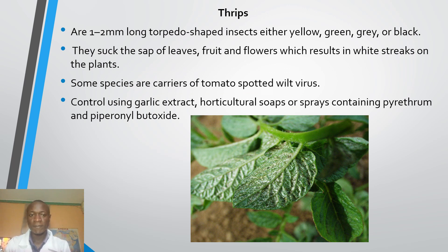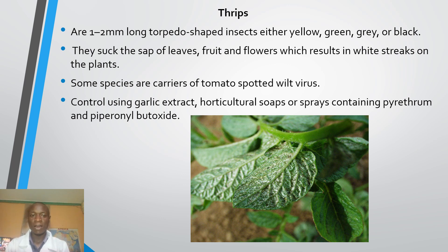Let's discuss thrips. In terms of their length, they are about 1 to 2 millimeters. They are torpedo-shaped insects with different colours — can be yellow, green, grey or black. They cause damage to vegetable crops by sucking sap from leaves, fruits and flowers of the crop, which results in white streaks on the plant.